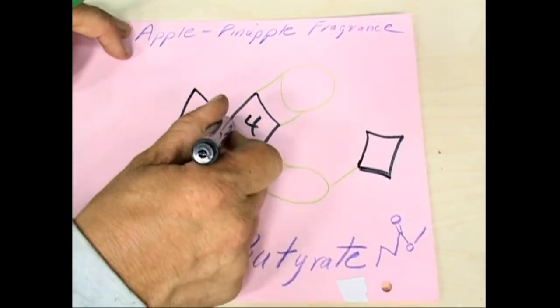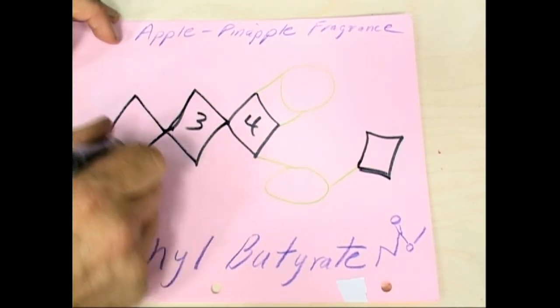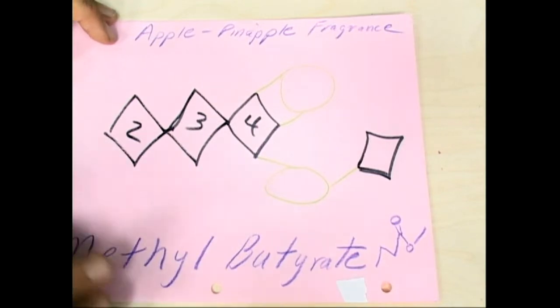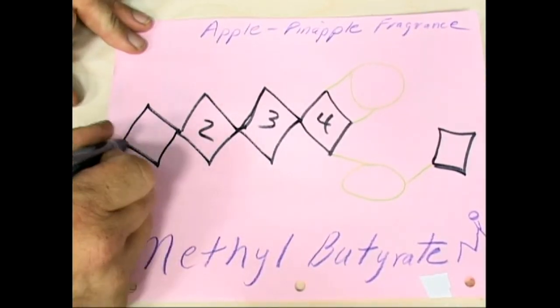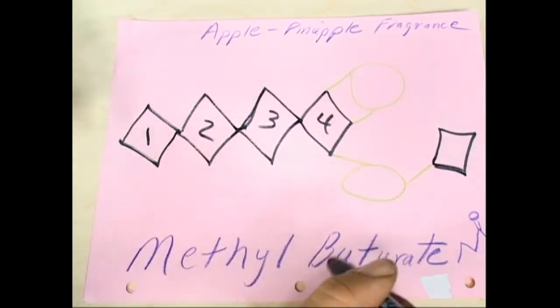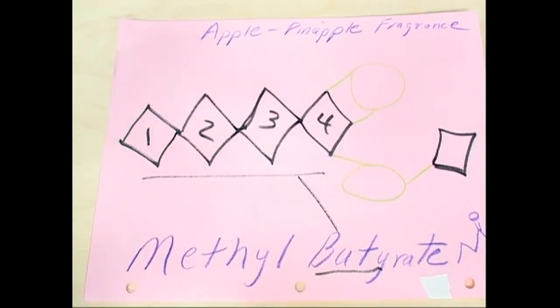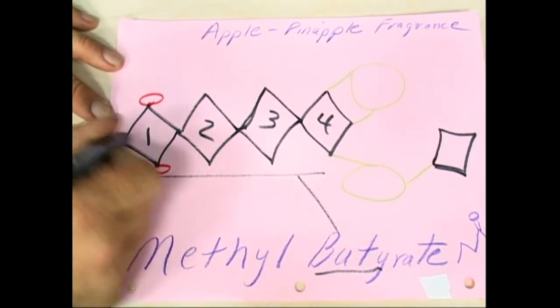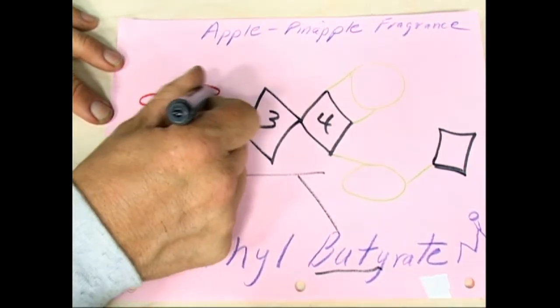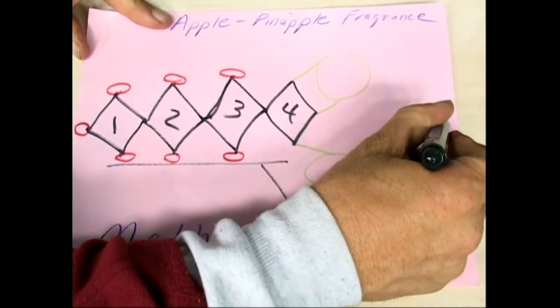3, 2, 1. Butyrate - butyrate is the 4. And you get your methyl out here.